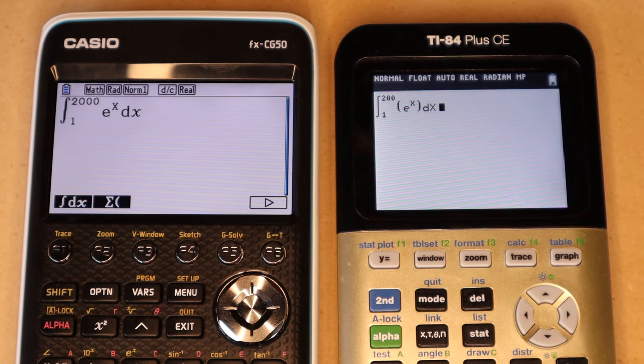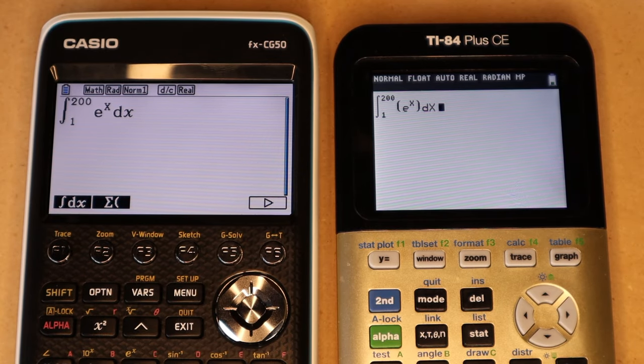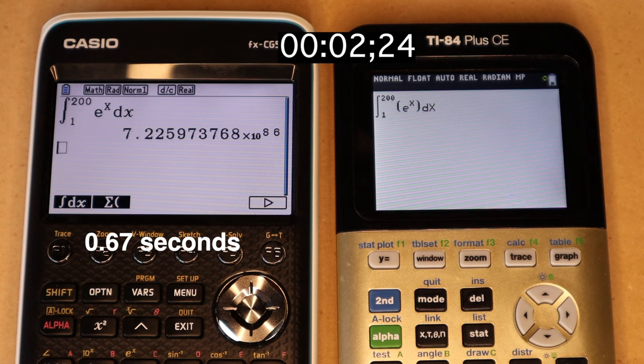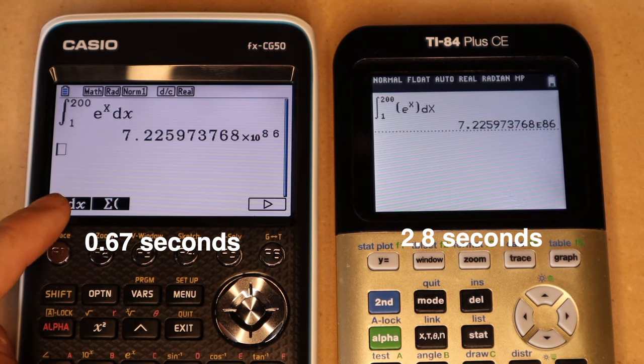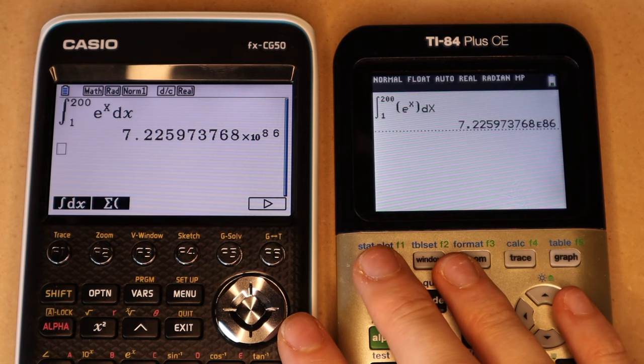So here's the first one. This is the integral of E to the X from 1 to 200, and I'm pressing Enter right now. So you can see the Casio was much quicker on that, and that is going to be the theme for the rest of the video.